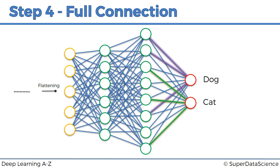During backpropagation, we also adjust the feature detectors. If a feature is useless to the output, it will be disregarded over thousands of iterations and replaced with a feature that is useful. So at the end of the day, in the final layer of neurons, you're likely to have features or combinations of features from the image that are truly representative and descriptive of dogs and cats.